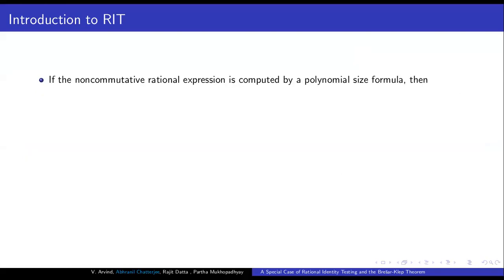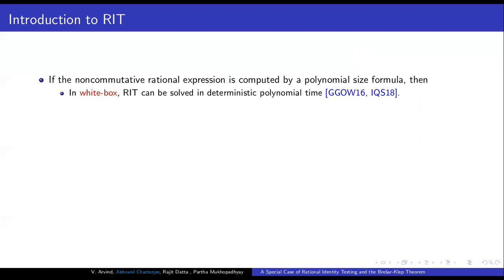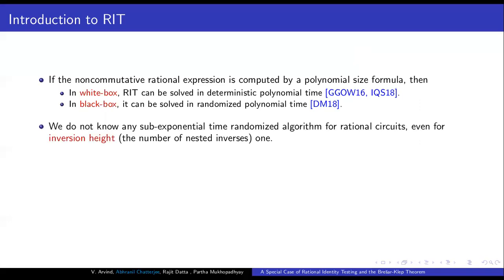What is known for this problem? If the expression is given as a rational formula — where the underlying graph structure is a tree — then in the white box setting, where we can exploit the structure, the problem can be solved in deterministic polynomial time. This follows from work by Gerd, Gurwitz, Olivera, and Wigderson, and another paper by Evanes, Kier, and Subramaniam. In the black box setting, this problem can be solved in randomized polynomial time, due to Dirksen and Markham.